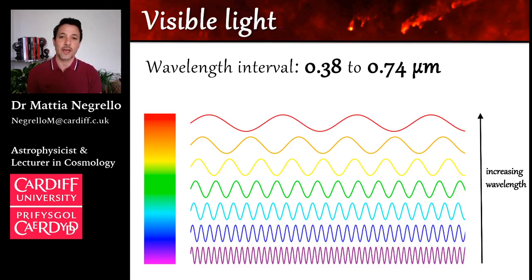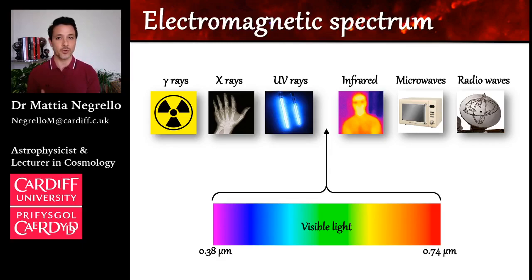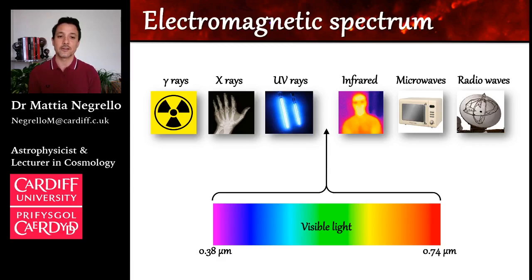However, there is nothing preventing electromagnetic waves from having either longer or shorter wavelengths than these two values that define the visible light. In fact, we have the whole electromagnetic spectrum, with forms of electromagnetic waves our eyes are not sensitive to, but they do exist out there. We have gamma rays, X-rays, UV rays — examples of electromagnetic waves with wavelengths shorter than the ones our eyes are sensitive to, and therefore more energetic, because the energy transported by radiation depends on the wavelength. On the other hand, at longer wavelengths we have infrared light, microwaves, and radio waves. The part of the spectrum I'm focusing on in this talk is the infrared.